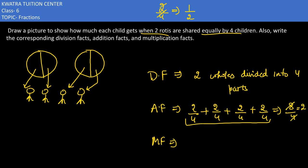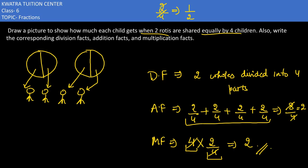Now we have the multiplication fact. Multiplication fact mein kya hoga? By four, so it would become 2 as the whole in this case.